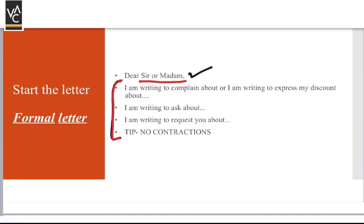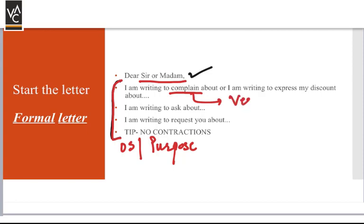These are prompts to help you write your opening or purpose statement. Depending on the question, you can start by saying: 'I am writing to complain,' 'I am writing to ask,' or 'I am writing to request.' Always directly follow 'I am writing' with a verb — you don't need to say 'I am writing this letter to,' as they already know it's a letter. Remember, there are no contractions in a formal letter.